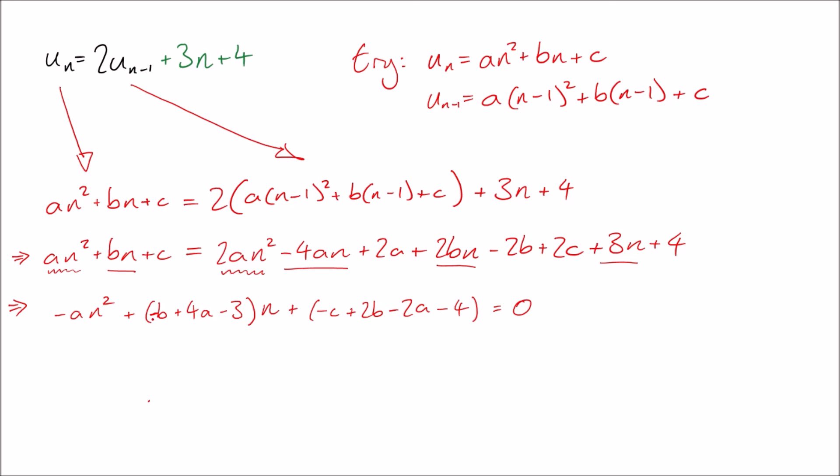We get how many n squareds are over here? There's minus a. How many n squareds are over here? There's none of them. So we get a equals zero. Then this gives us that B is minus three.